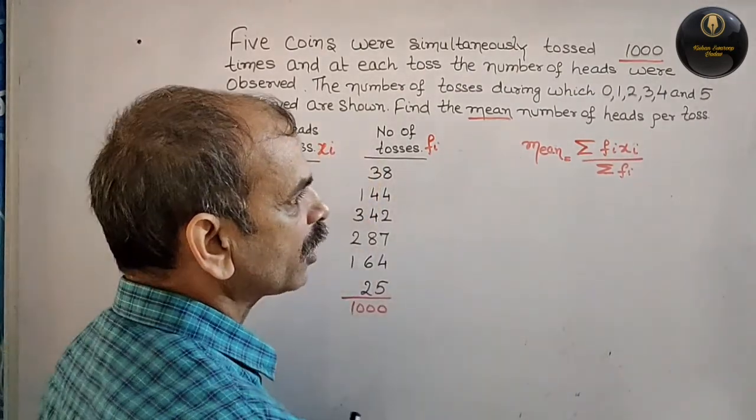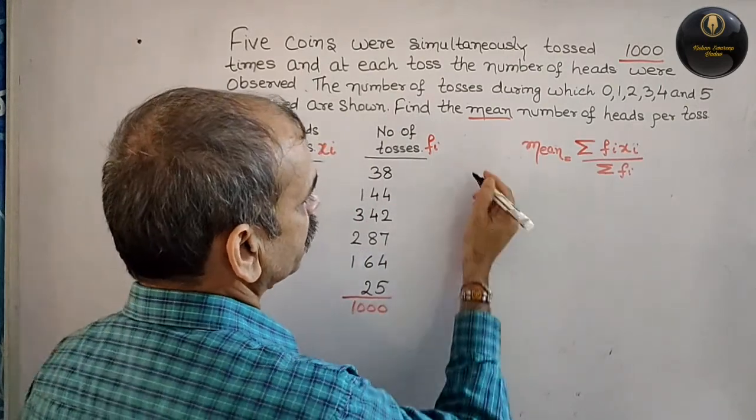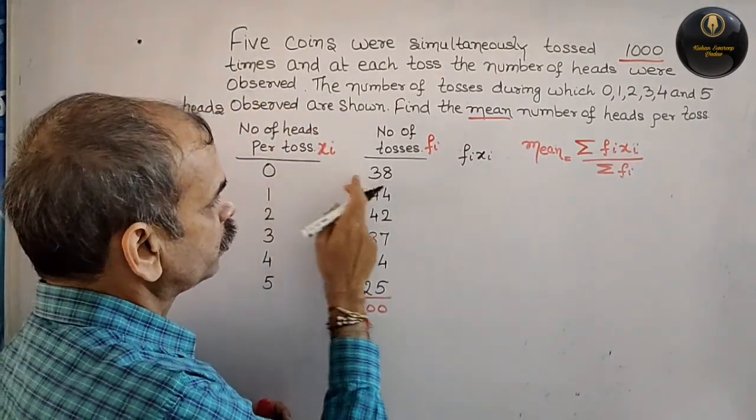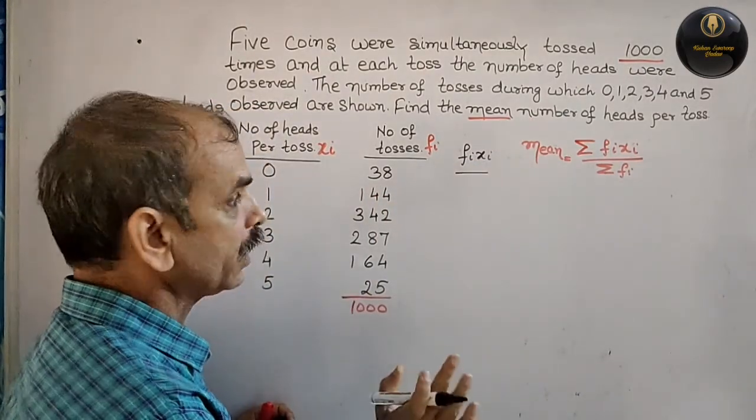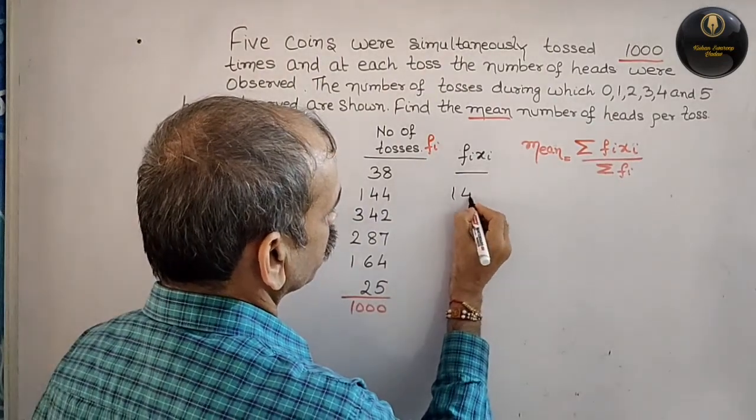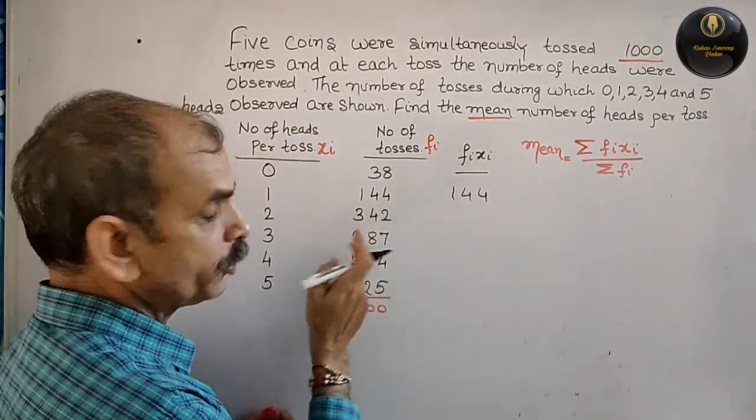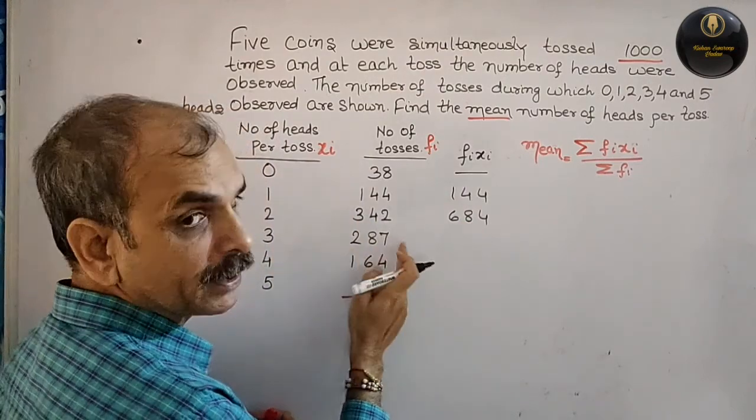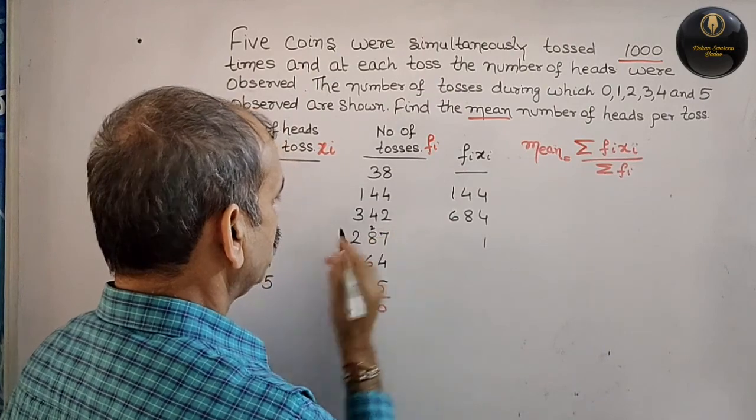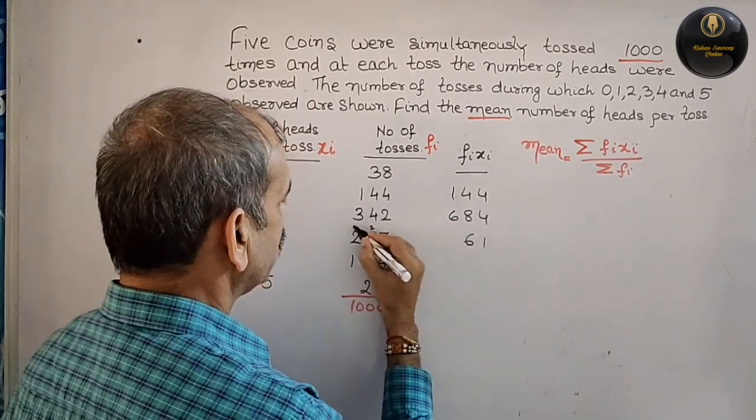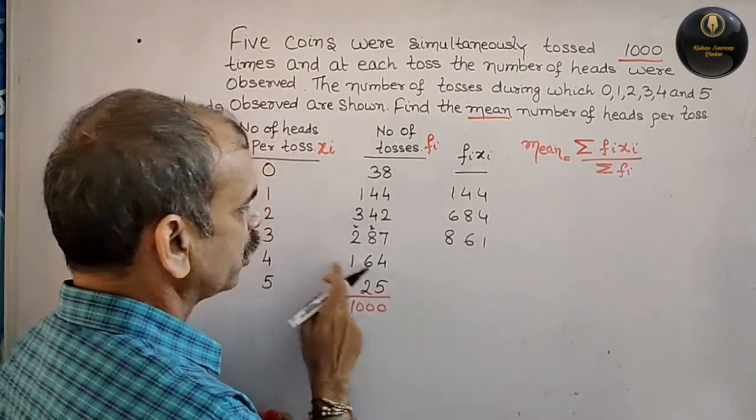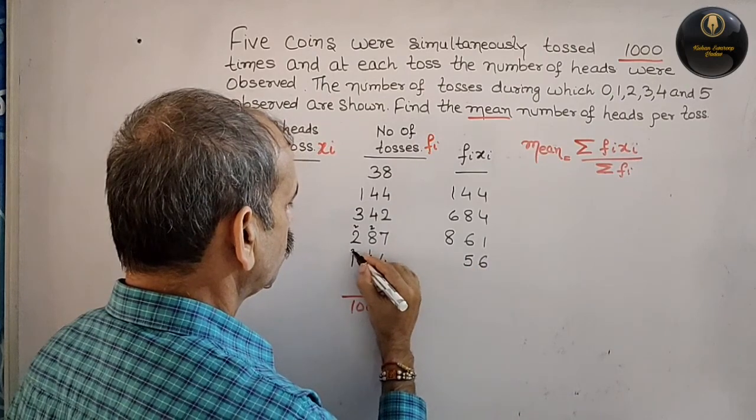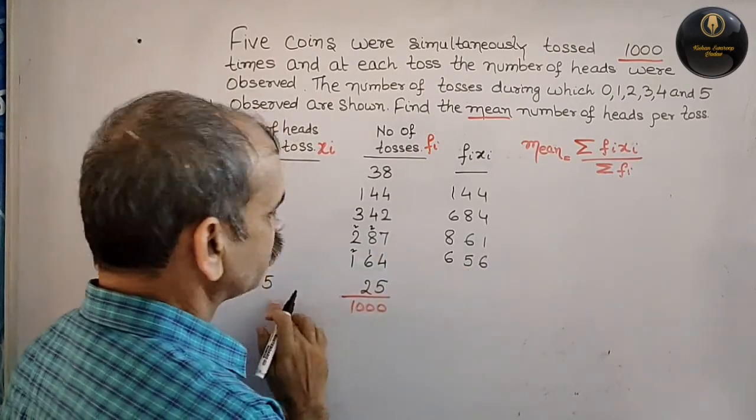Next is fi times xi, the multiplication. So 0 into 38 is 0, 1 into 144 is 144, 2 into 342 is 684, 3 into 287 is 861, 4 into 164 is 656, and 5 into 25 is 125.